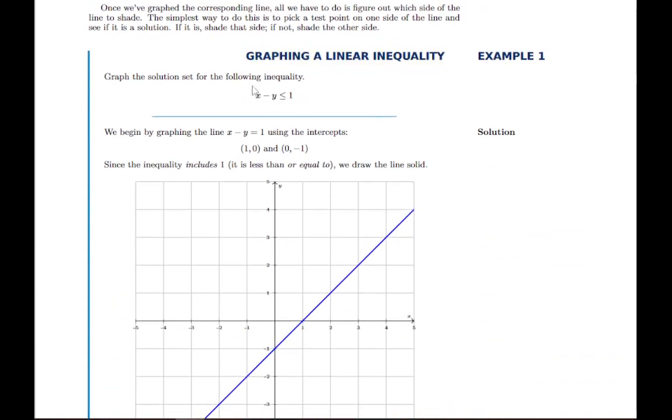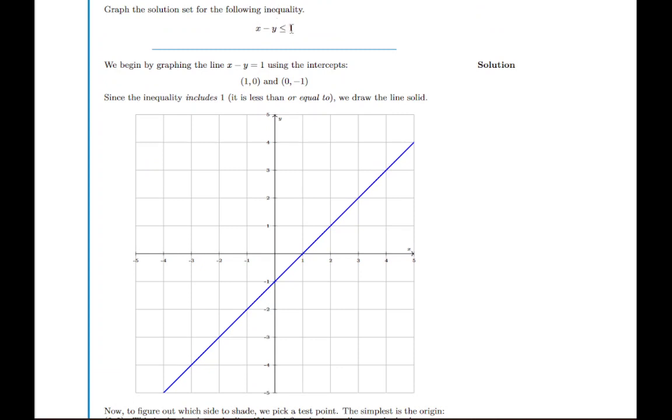Here's another example, this one's a little more complicated. If we graph the line x minus y equals 1 first, notice we're using the intercepts to do that just because it's the easiest way to graph this particular line. Then we draw that line, notice that we draw it solid because we have less than or equal to, it includes 1 so we draw that line solid. Now the question is of course which side of this line should we shade in? There are several ways to do this but perhaps the easiest way is just to pick what I call a test point.